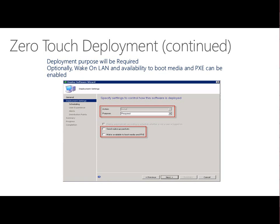We also need to make sure we can use Wake on LAN. The idea of Wake on LAN is it gives us the ability to do this after hours without having someone go and power machines on. I can simply send out the magic packets, wake up the machines, and have a deployment happen overnight. Users go home, come back the next day, and they're refreshed into the new environment — that's the beauty of zero-touch.